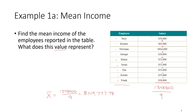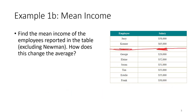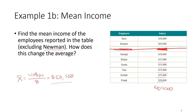This represents the average income, but notice there's only one employee who makes over that amount — all the rest make below it. Let's see what happens when we exclude Newman. Now we add the remaining values and divide by eight: 404,000 divided by 8 gives a mean of $50,500. Leaving Newman out lowers the average significantly.